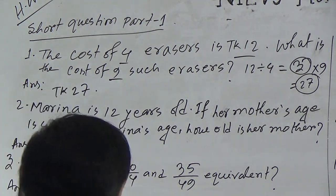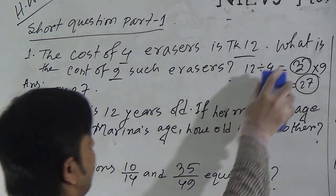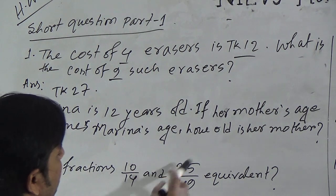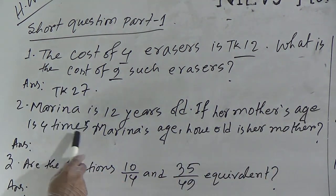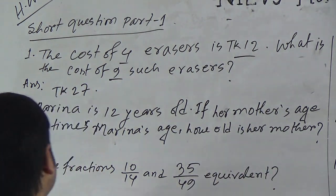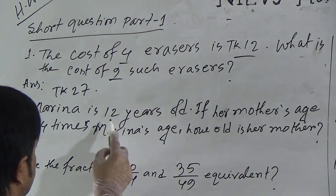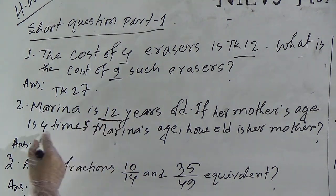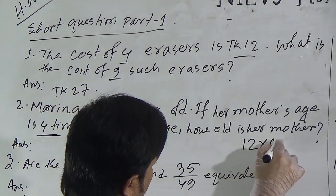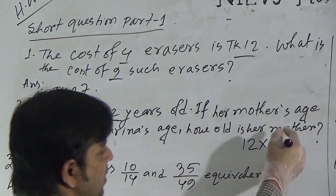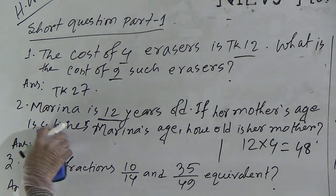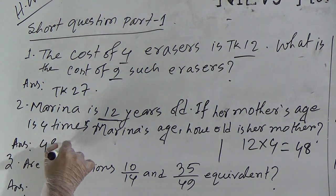Question 2: Marina is 12 years old. If her mother's age is 4 times Marina's age, how old is her mother? We multiply the age of Marina by 4. 12 multiplied by 4 is 48. So Marina's mother's age is 48 years.